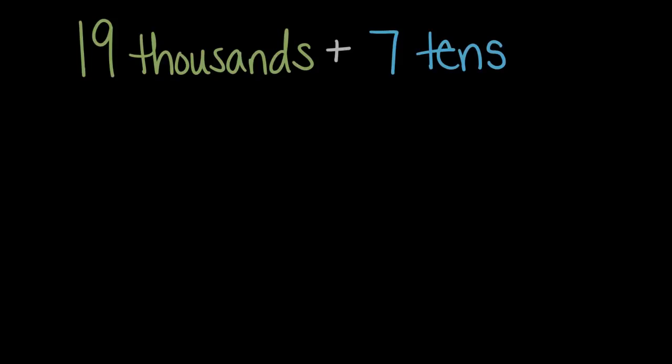What is 19 thousands plus seven tens? First let's think about what are 19 thousands and what are seven tens, and then from there we can add them.